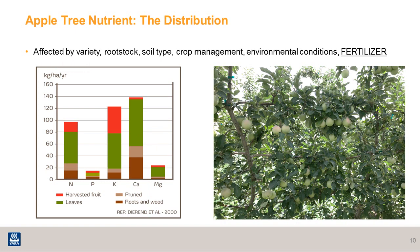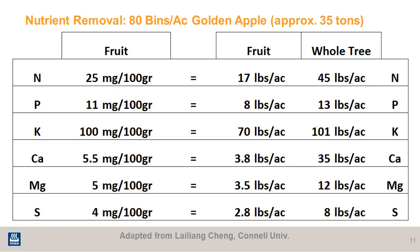This distribution is affected by the variety, the rootstock, the soil type, crop management, environmental conditions, as well as fertilizer. Looking at the nutrients removed from the soil — based on the example of Golden Delicious apples yielding 80 bins per acre, or about 35 tons — if fruit samples show 25 mg per 100 g fresh weight of nitrogen, that's about 17 pounds of nitrogen per acre in the fruit, and it requires about 45 pounds of nitrogen to grow that crop. For calcium, it requires about 3.8 pounds in the fruit, or about 35 pounds to grow the entire crop.